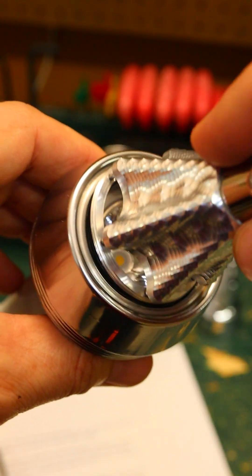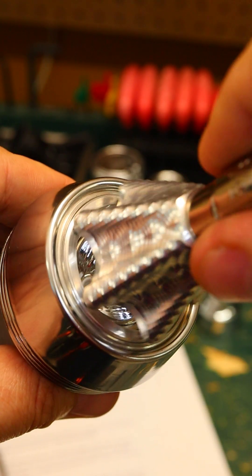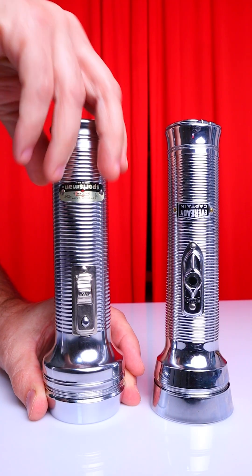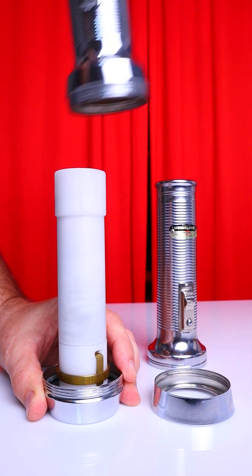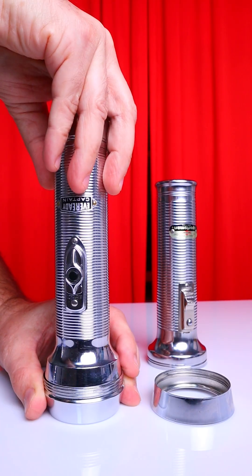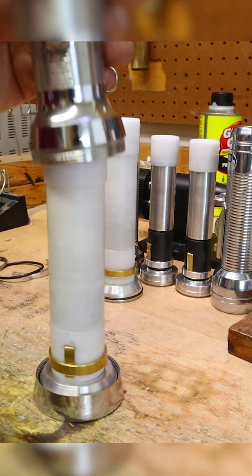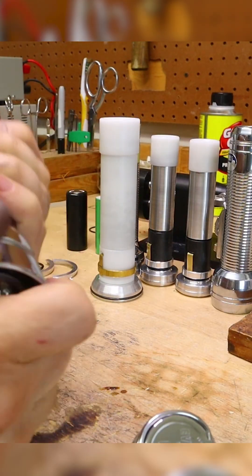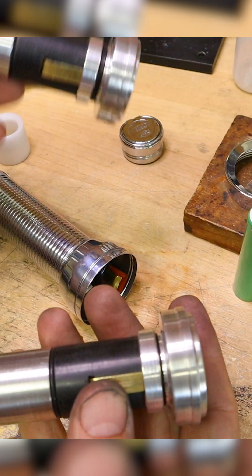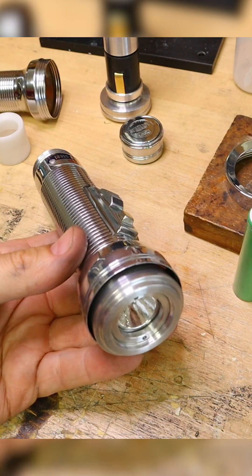The other thing that introduced complexity into this build was the customer wanted to take the light engine from the 2D Eveready and put it into the 2D Ray-O-Vac, basically have interchangeable light engines between the brands. Same thing for the C cell lights.